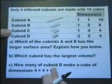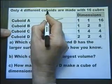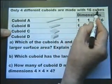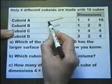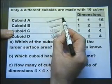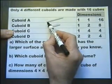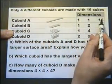It says here that only 4 different cuboids can be made with 16 little 1cm cubes. In other words, we could put them in a row of 16, so it would be 1 wide, 1 high and 16 long.